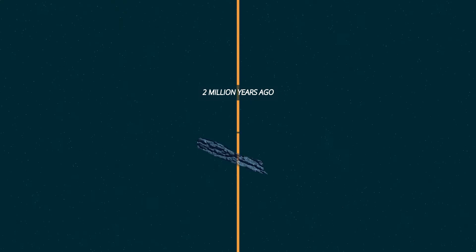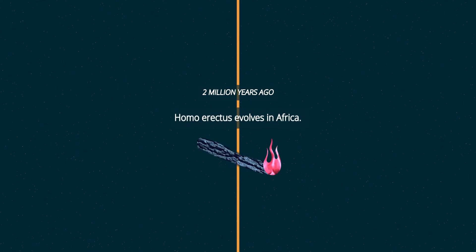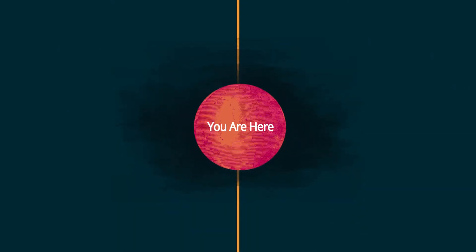2 million years ago, Homo erectus evolves in Africa. You are here.